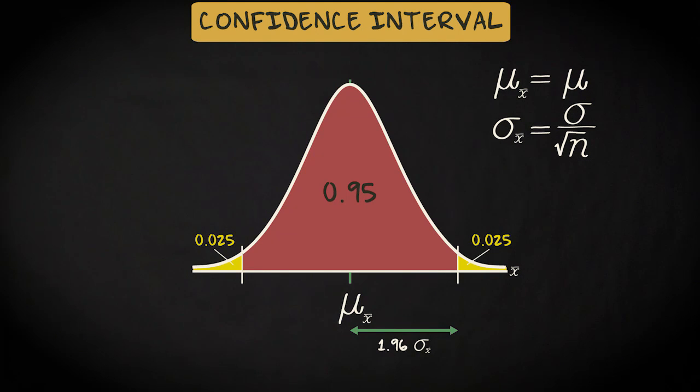This distance of 1.96 standard deviations is what we call the margin of error. The margin of error tells us how accurately our sample mean x-bar is likely to estimate our population mean mu.